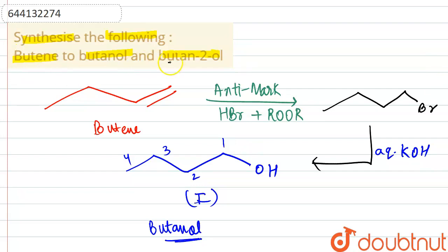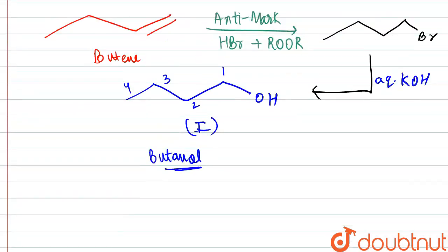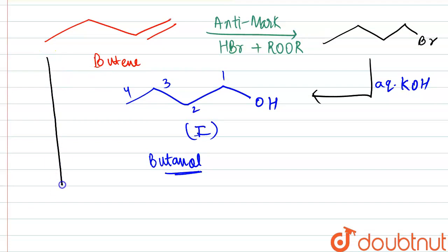Now the next part is for butane-2-ol synthesis. So again we are going to start from butene only, but this time we would be doing simple addition with HBr and that is going to follow Markovnikov's addition rule. Markovnikov's addition will be opposite to anti-Markovnikov, so substituent is bonded to more substituted carbon.